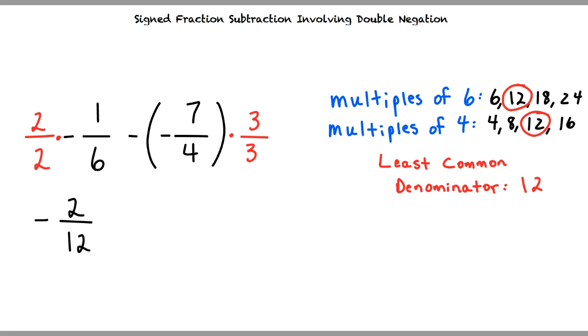Negative 7 over 4 times 3 over 3 is equal to negative 21 over 12. Now our expression is negative 2 over 12 minus a negative 21 over 12. At this point, we now have a common denominator and we are almost ready to perform our subtraction.